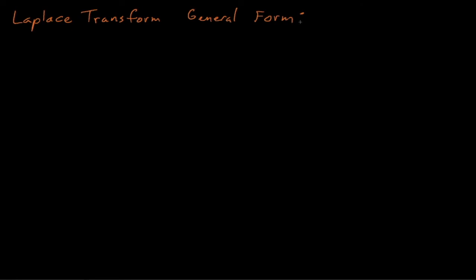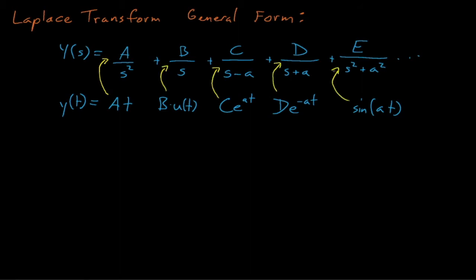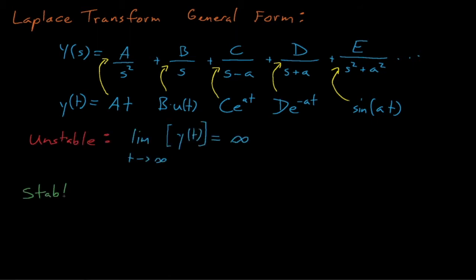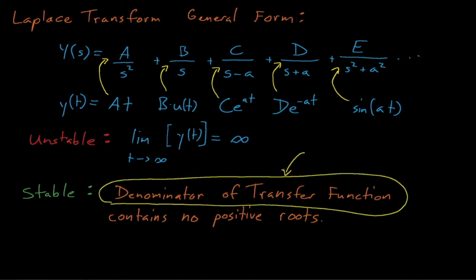Recall that through the power of partial fractions, we can represent any system's output as the sum of polynomials that are a function of s, and then we can see what kinds of functions these polynomials represent when we convert them back into the time domain. In the previous lecture, we saw behavior of a control system that had e to the negative 2t in all of its output signals. This function appeared so often because it was a part of the system's transfer function. So one of the first things we notice is that y of t is inherently unstable if any of the terms in our system's transfer function's partial fraction expansion contain a positive exponential term. The terms in the partial fraction expansion are dictated by the roots of the denominator, known as the characteristic equation. Thus, our system will be unstable if its characteristic equation contains any positive roots.